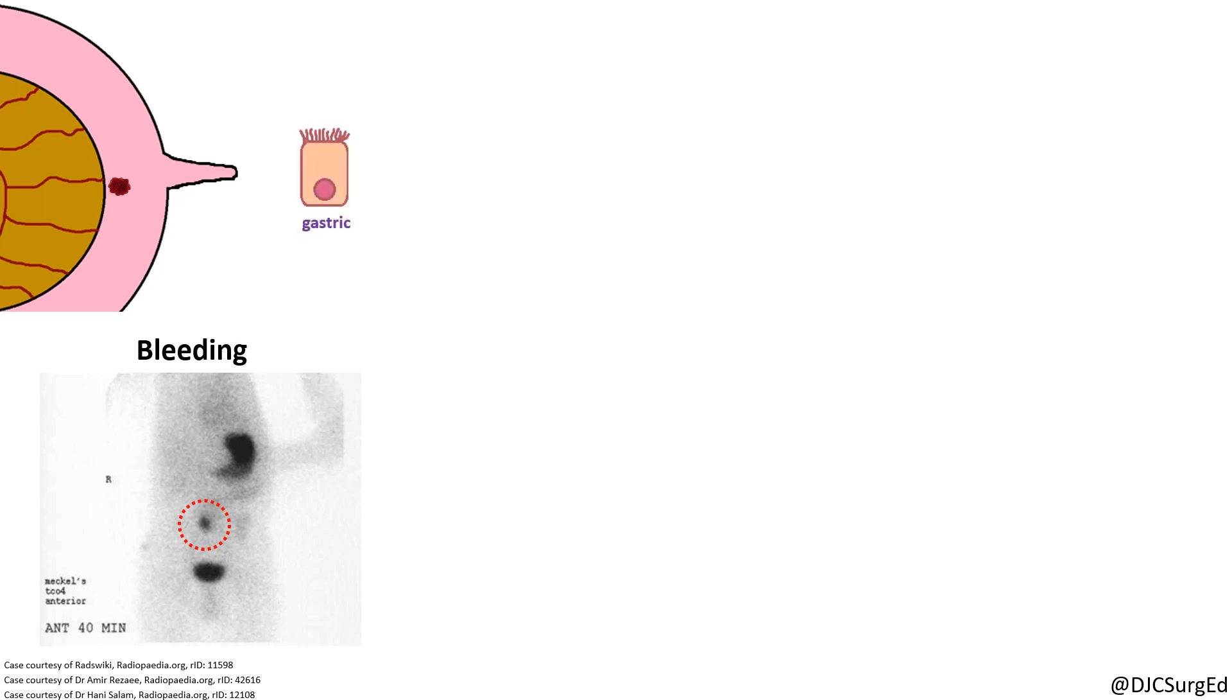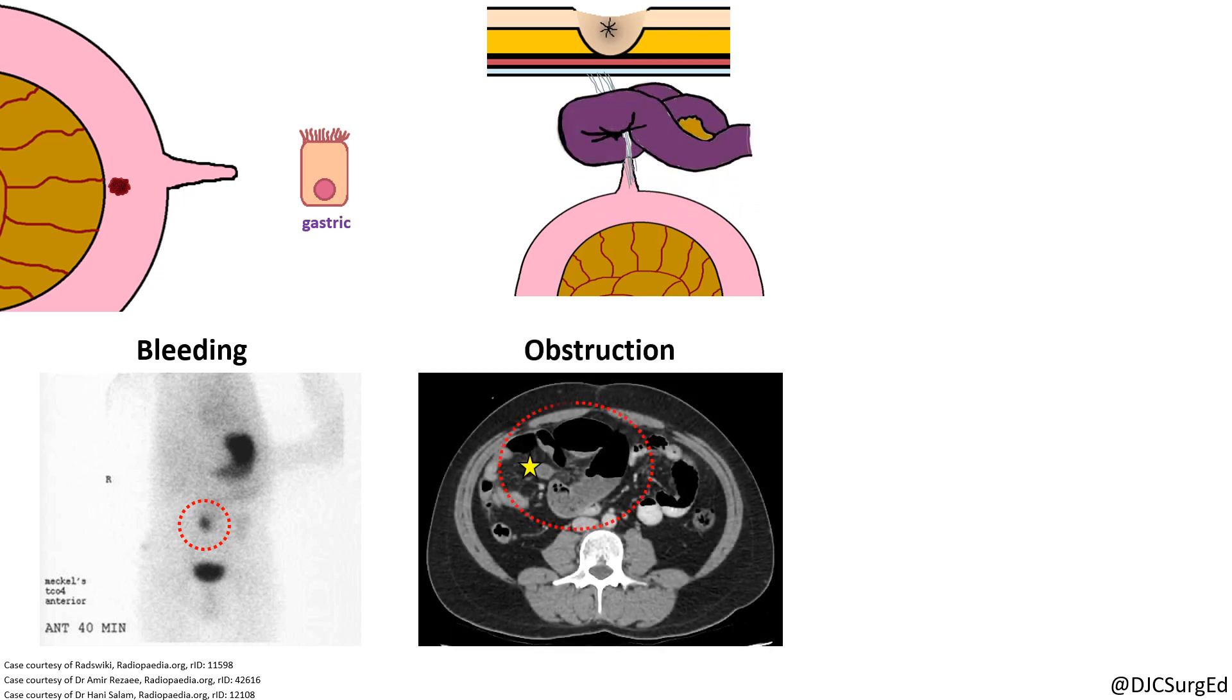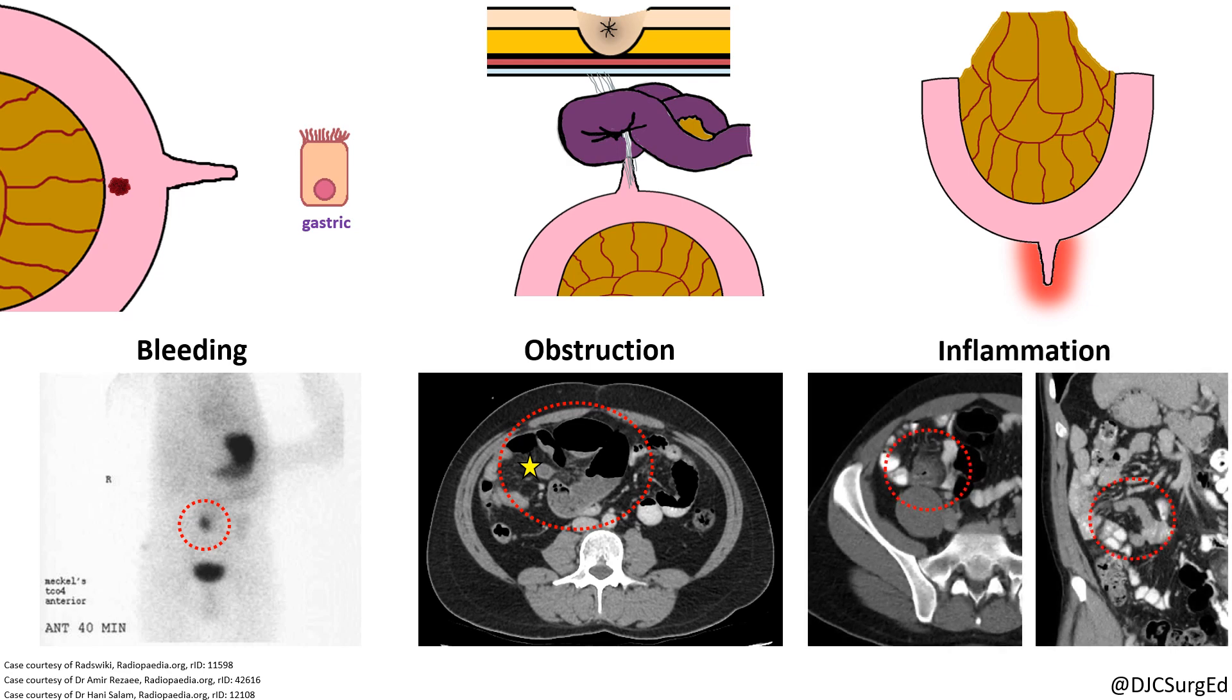Diagnosis of a bleeding Meckel's diverticulum can be made by using a Meckel scan or mesenteric angiography. A Meckel scan is a nuclear medicine study using technetium radiotracer, which has an affinity for gastric mucosa. Obstruction caused by the diverticulum, a patent duct, adhesive bands, or inflammation secondary to Meckel's diverticulitis can be identified on CT.